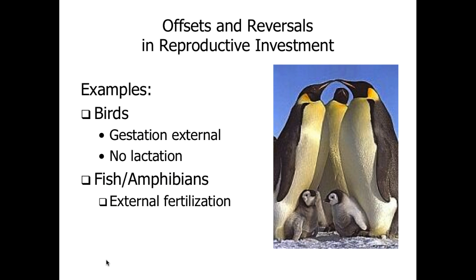With fish and amphibians, they often have external fertilization and external gestation, and really neither parent is terribly involved. As a result, neither parent is terribly choosy about which partners they have, and they tend to show less selection in terms of which mate they choose than many other species.